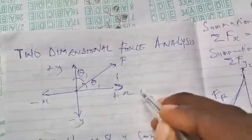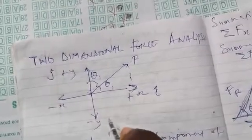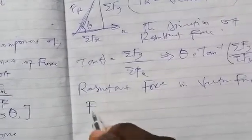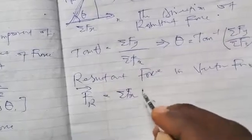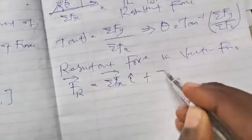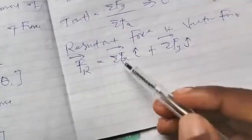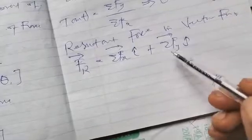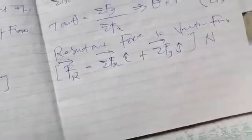Take note: we said the X component of force in terms of vector representation uses i, and the Y component represents j. So the resultant force in vector form is simply: F_R = (Sigma F_x) i + (Sigma F_y) j. All you need to do is take whatever you get for Sigma F_x and Sigma F_y and attach i and j to them respectively — that gives us the resultant force in vector form.